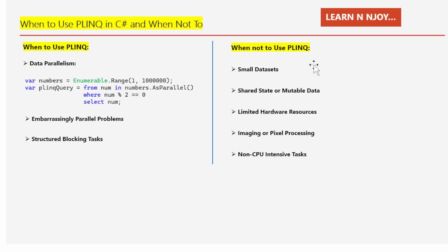Let's tie it all together with an example. Imagine you are analyzing a large collection of documents and extracting keywords from each one. Since the analysis for each document is independent, PLINQ can turbocharge this process by parallelizing the task across multiple documents, slashing your processing time. On the flip side, if you are resizing images where intricate pixel manipulation and collation are involved, PLINQ might not be the best choice due to the collation bottleneck — a different parallelization approach would likely yield better results.